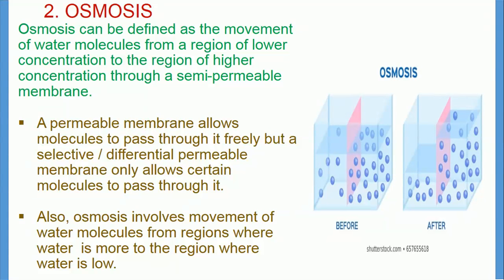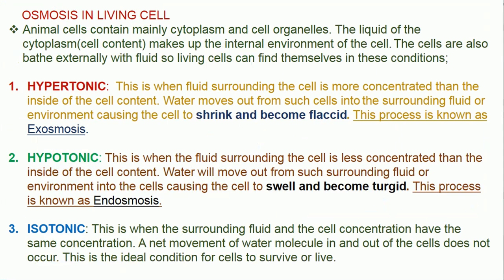Osmosis involves the movement of water molecules from a region where water is in abundance to the region where water is scarce. The region where water is abundant is said to be of low concentration, while the region where water is low is said to be of high concentration. Osmosis in living cells: animal cells contain mainly cytoplasm and cell organelles. The liquid of the cytoplasm makes up the internal environment of the cell, and cells are also bathed externally with fluid. Living cells can find themselves in different solution conditions. One: hypertonic solution — this is when the fluid surrounding the cell is more concentrated than the cell content, so water will move out from the cell into the surrounding fluid, causing the cell to shrink and become flaccid. This process is known as exosmosis.